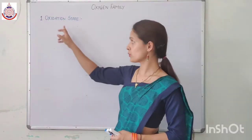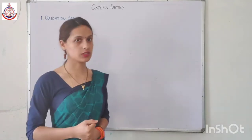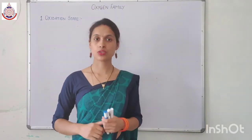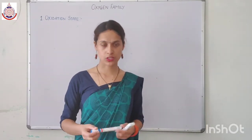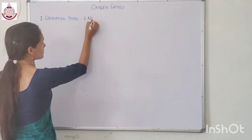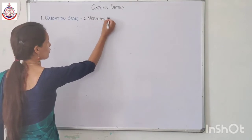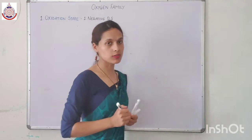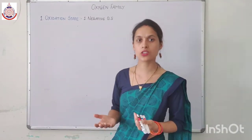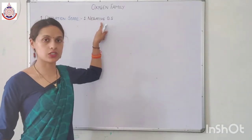First we will take the first chemical property, that is the oxidation state. The elements of the oxygen family show two different types of oxidation state: negative oxidation state and positive oxidation state. First of all we will take the negative oxidation state.